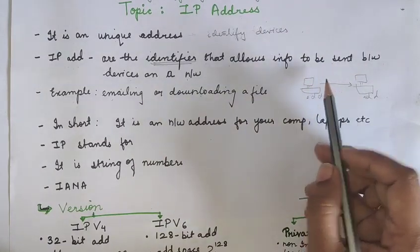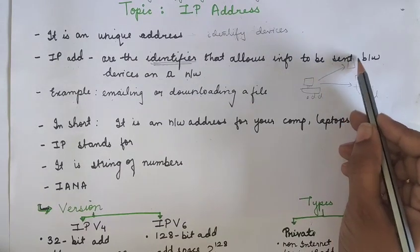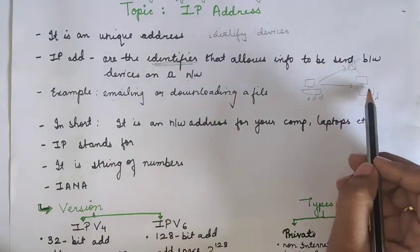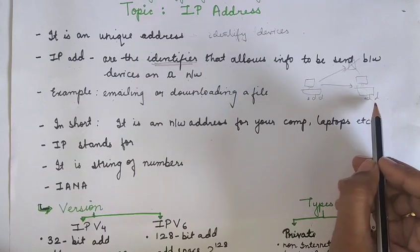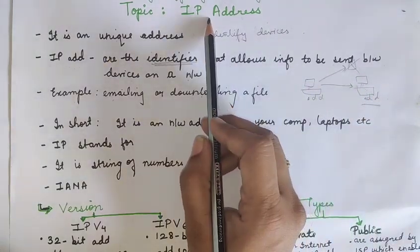If we don't have the unique address, obviously the data cannot be transferred to this computer. We want the data to be transferred to this particular computer. So we can do this with the help of an IP address.